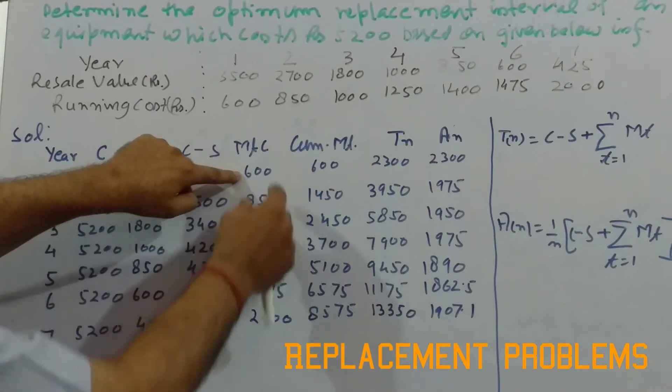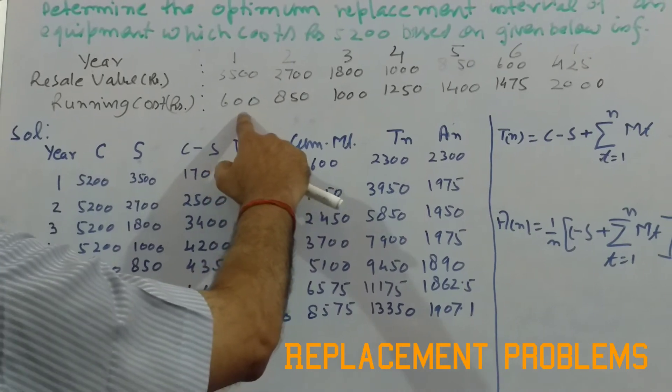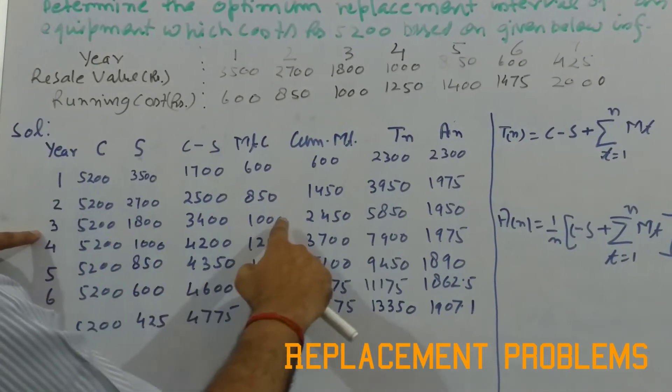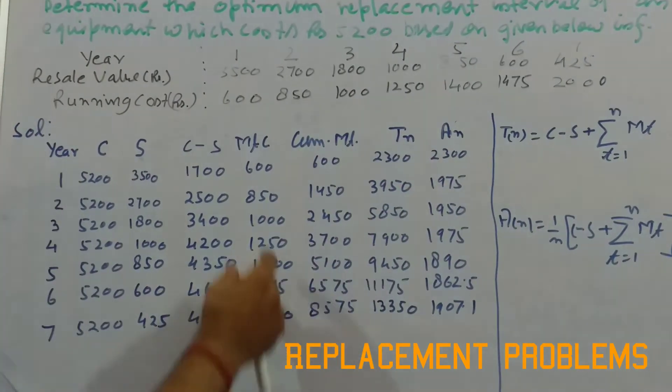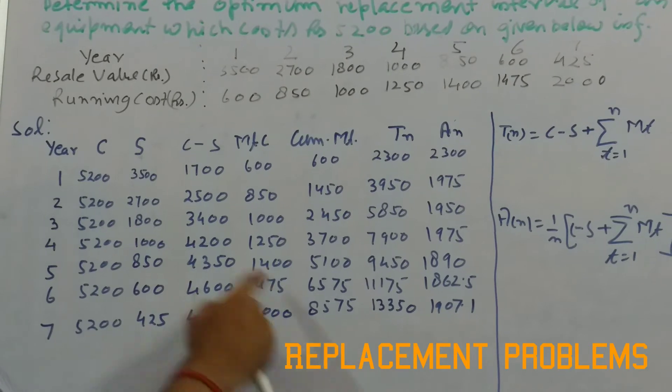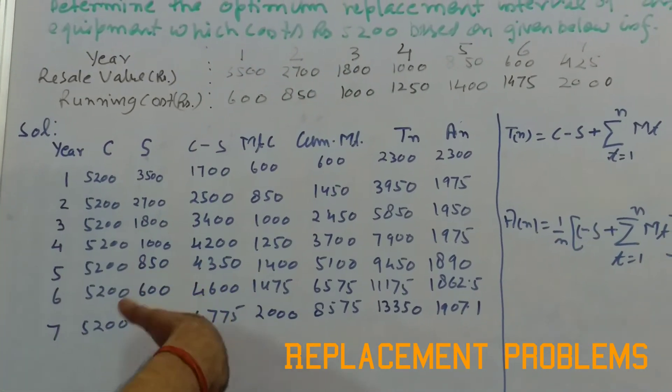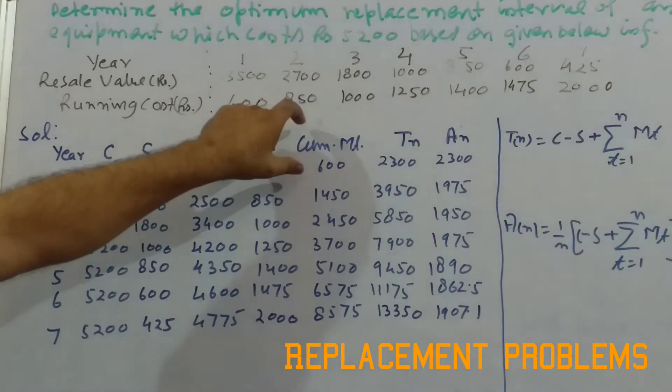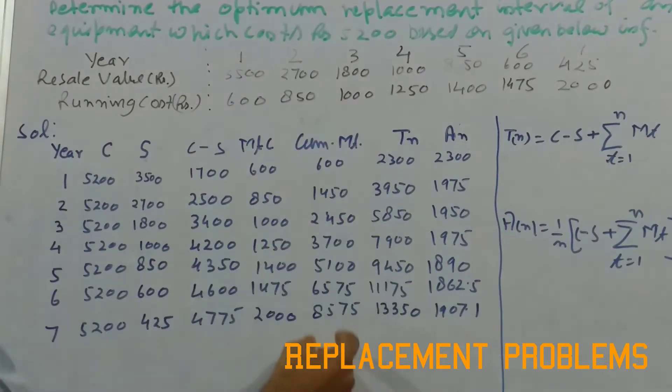Maintenance cost we have just jotted down here: 600 for first year, second year 850, third year 1000, and so on. Now here we need to calculate cumulative maintenance cost because in any particular year or after any particular period of time, the maintenance cost will be cumulative. So we take out the cumulative figure here.